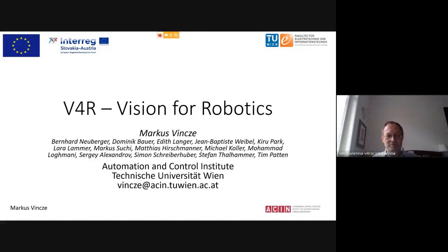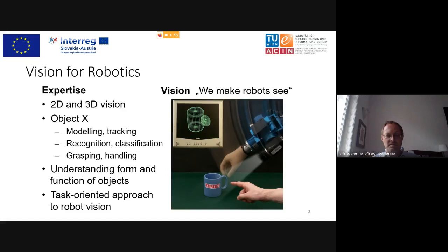Good afternoon. I have half an hour and I hope it will be very interesting for you. Thanks Richard for the introduction. This is Vision for Robotics — we try to make robots see. We are mainly concerned with whatever has to do with stable structures in the world: objects, furniture, and so on. We use 2D and 3D vision methods for modeling, tracking, recognition, classifying, and finally grasping and handling objects.